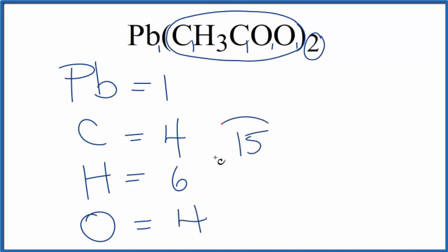So you have a total of 15 atoms for Pb(CH3COO)2, lead-2 acetate.